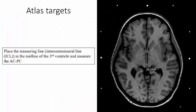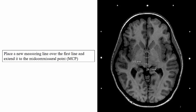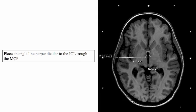When we are performing atlas targeting, then we start by placing a measuring line from the AC to the PC. We place a new measuring line over the first line and extend it to the mid commissural point. We place an angle line perpendicular to the ICL through the MCP.